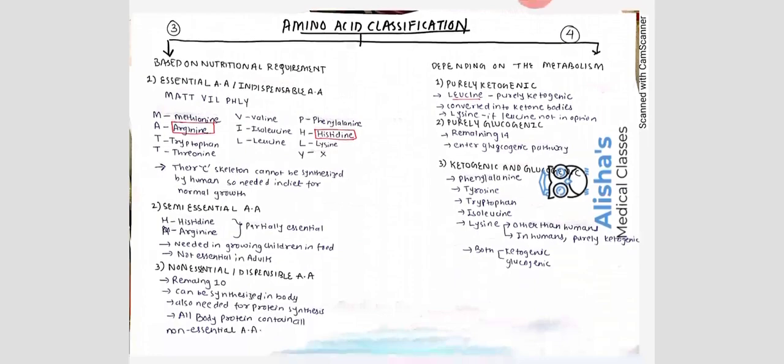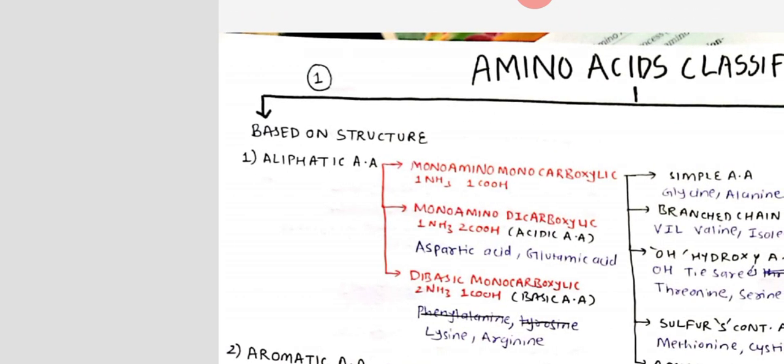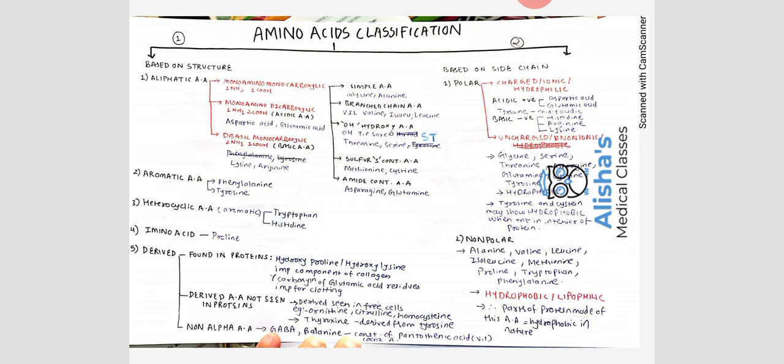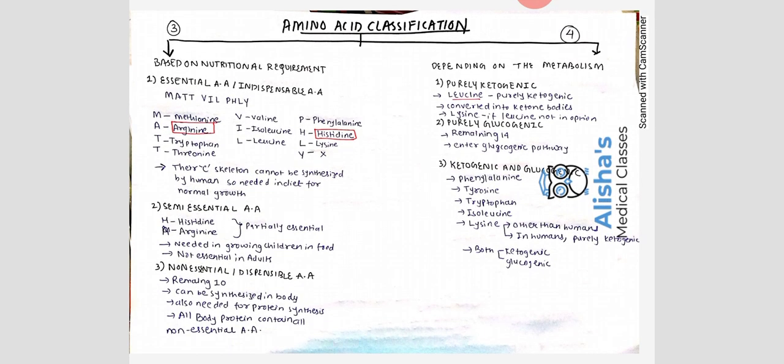The third classification is based on nutritional requirement — essential and non-essential amino acids. To remember essential amino acids, use the mnemonic 'Met Will Fly' — methionine, arginine, tryptophan, threonine, valine, isoleucine, leucine, phenylalanine, histidine, and lysine.